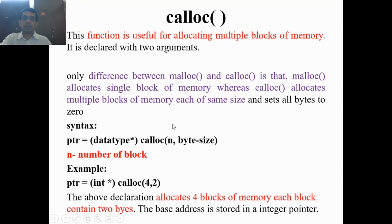Multiple blocks of memory of the same size are allocated using the calloc() function. For example, ptr is the pointer variable, integer star is the typecasting, and calloc() is called with four comma two — four stands for the number of blocks, and each block contains two bytes. This declaration allocates four blocks of memory, each containing two bytes, and the base address is stored in the integer pointer. Like malloc(), calloc() also returns a void pointer that is converted to integer by using type conversion.